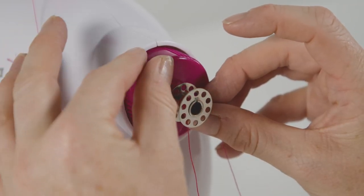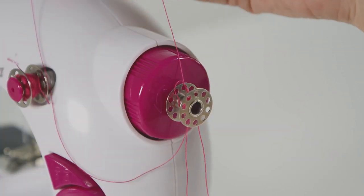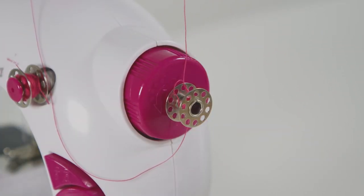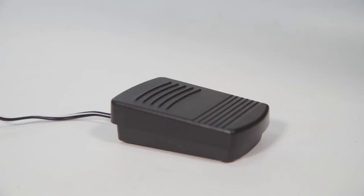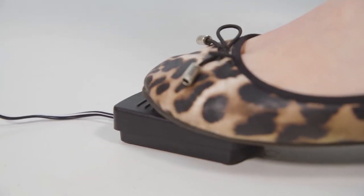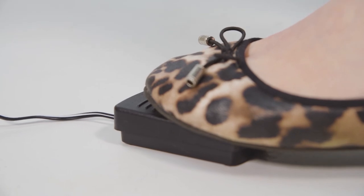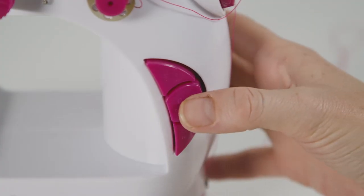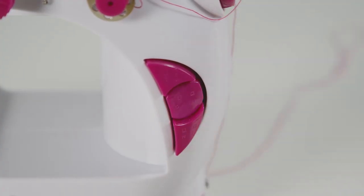Take the end of your thread and thread it through one of the bobbin holes on the left and pull through the other side to secure in place. Press down the foot pedal to begin winding the bobbin. Alternatively, you can use the auto-sew mode buttons at the front of your machine.